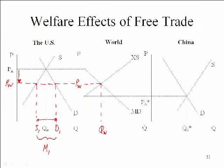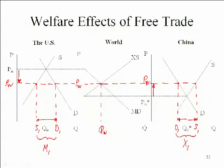We can also take this world price over to China and see what's happening there. Same world price in both places, because we assume no transportation cost. In China, the price of tires is rising, inducing Chinese producers to supply more to the market. But that higher price is also reducing Chinese domestic demand for tires. With supply increasing and demand decreasing in China, China will export the difference. If we had drawn these absolutely to scale, then the imports in the United States would be exactly equal to the exports coming out of China.